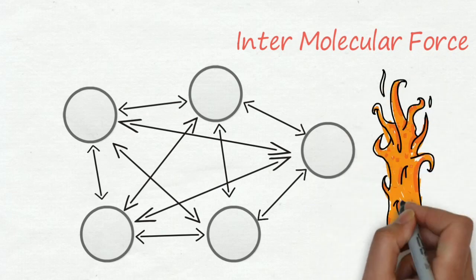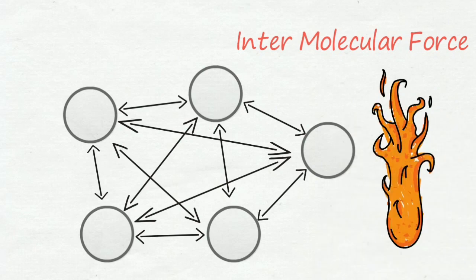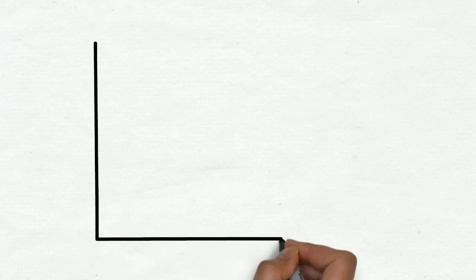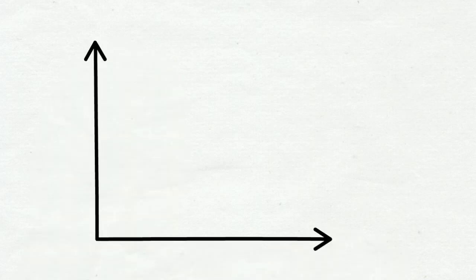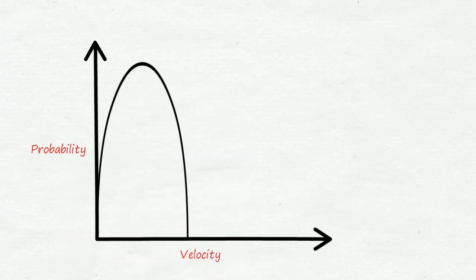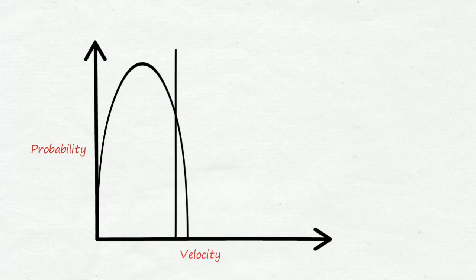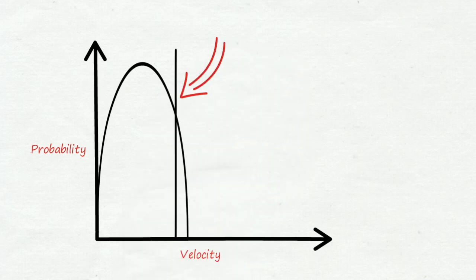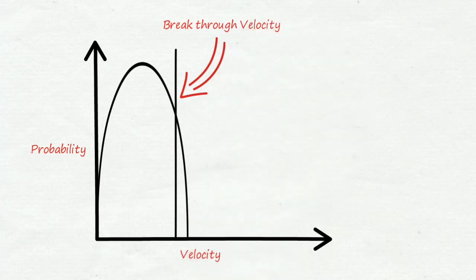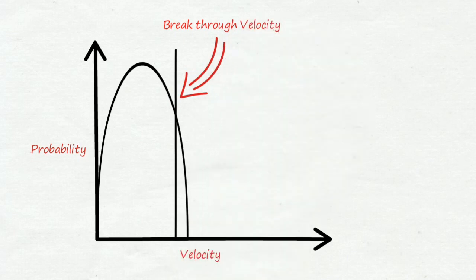Let's see which molecules have enough energy to leave the liquid substance. We require an energy distribution chart. The area under this curve represents the number of molecules, and this line represents the velocity barrier. This means such a velocity will be required to overcome the intermolecular force, because velocity has a direct relation to energy.